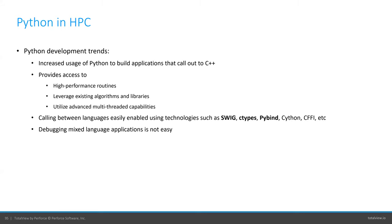There was some interest from people to see this. What we see amongst our customer base is an increased usage of Python, particularly to call out to applications written in C or C++. That's predominantly to provide access to high-performance routines and to leverage existing algorithms and libraries. There are lots of different frameworks available for writing mixed language applications, such as Swig, ctypes, Pybind, and Cython.